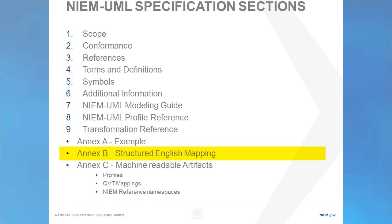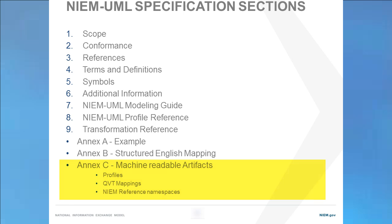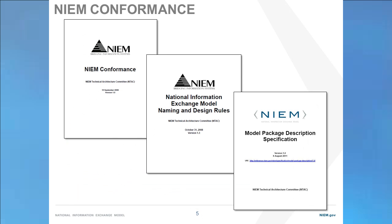NXB is a structured English mapping that defines the transformation rules between models and the XML artifacts in a very precise English format. Essential to NiemUML are the machine-readable artifacts: the profiles which plug into UML tools, the QVT mappings that provide the transformations between models and artifacts, and the Niem reference namespaces derived from the existing Niem reference models. Conformance is essential to Niem, and the Niem conformance documents are strictly adhered to in the NiemUML specification. This includes the Niem conformance rules, the naming design rules, and the model packaging specifications. The output of NiemUML-compliant tools fully conforms with these existing technical specifications.